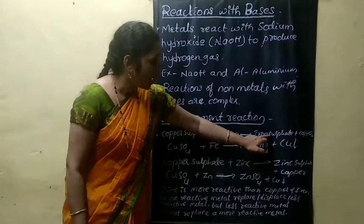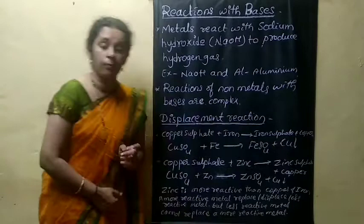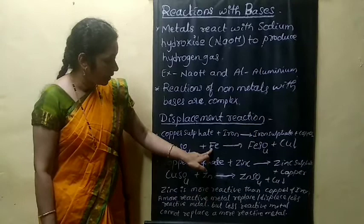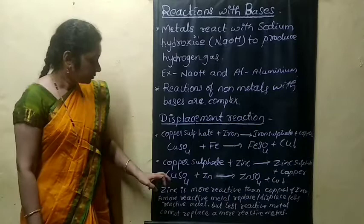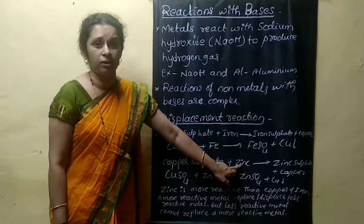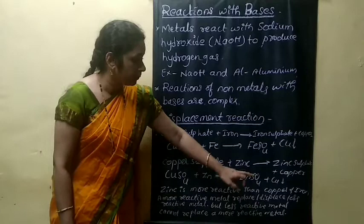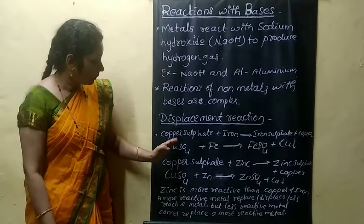This is because of the reaction: copper sulfate reacts with iron (Fe) to form iron sulfate (FeSO4) and copper, which is deposited (indicated by a downward arrow). Another example: copper sulfate reacts with zinc to form zinc sulfate (ZnSO4) and copper is deposited.